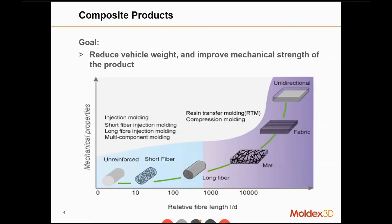Why do we need to use RTM? We will start from the application side. In the beginning of polymer processing, people were using pure polymer — or we may call it unreinforced polymer. But when we require much stronger structures, people tried to add fibers to it. Firstly, we may add short fiber, maybe glass fiber or even carbon fiber. But when short fiber is out of requirement, we may go for a long fiber process, adding longer fiber to the polymer to make the structure even stronger.